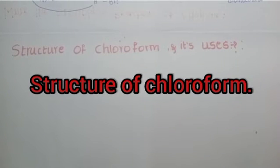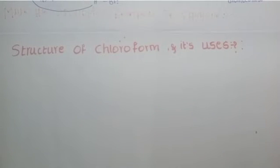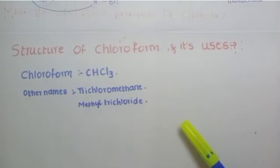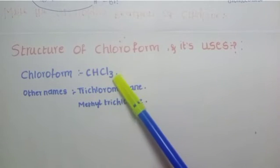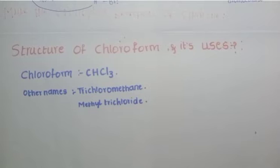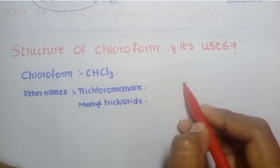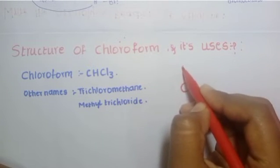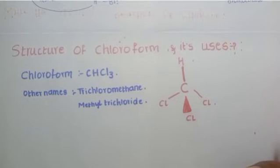We should know that chloroform is also called trichloromethane or methyl trichloride. Methyl trichloride means a methyl group containing three chlorides. This is the formula for chloroform, with the main carbon at the center and a hydrogen present.